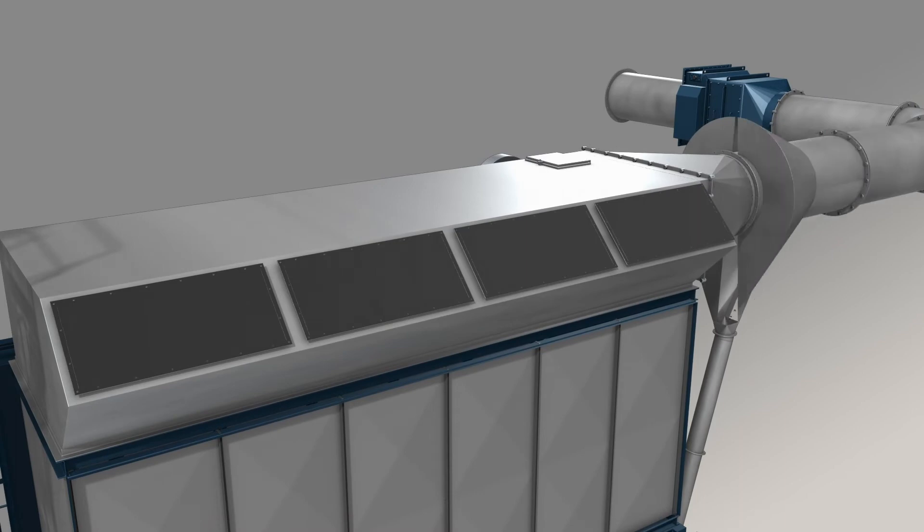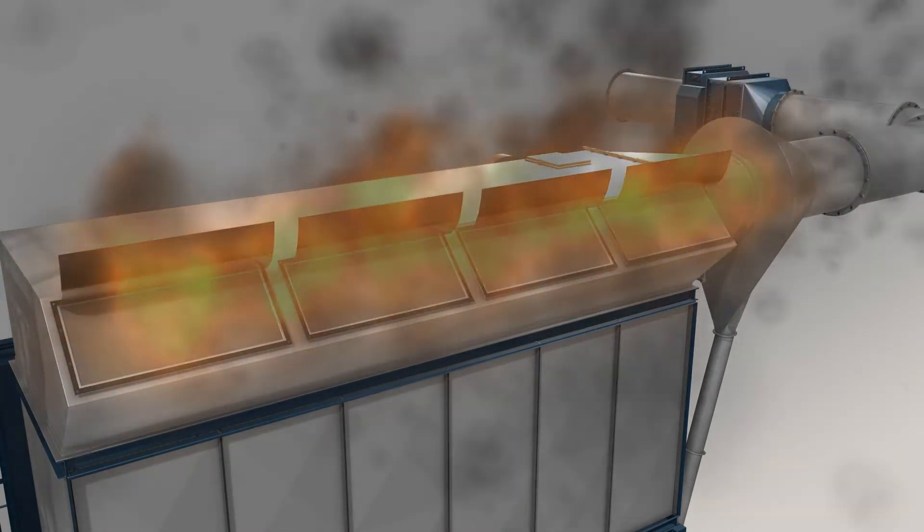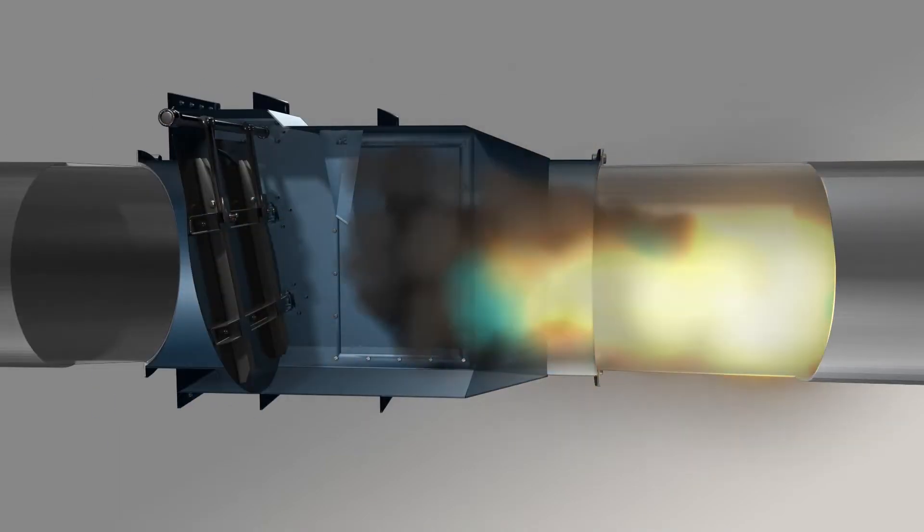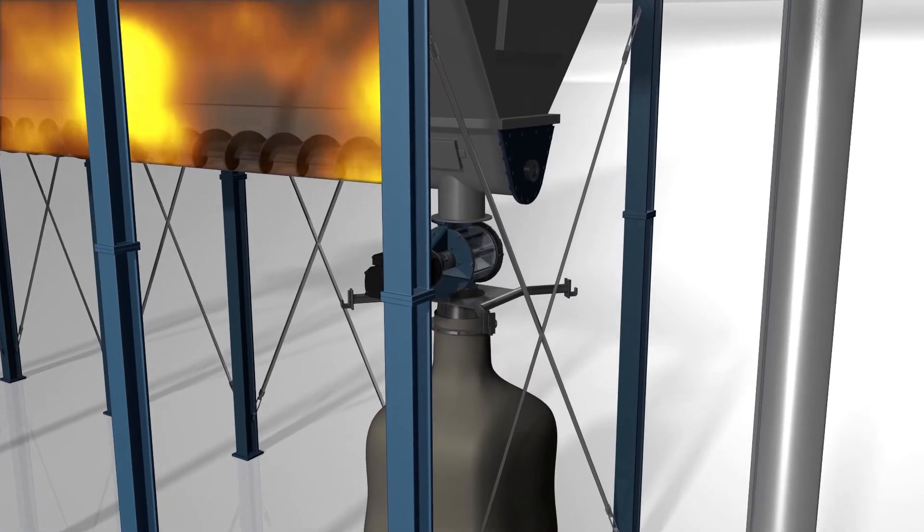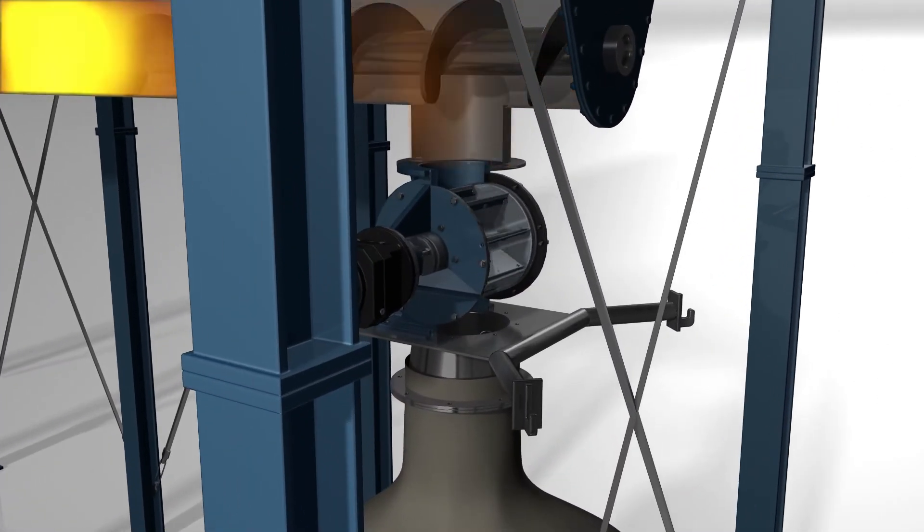Explosion vents allow a safe and controlled release. The explosion pressure wave closes and locks the explosion isolation valve before the flame front arrives, while a rotary valve stops it from reaching the discharge bags.